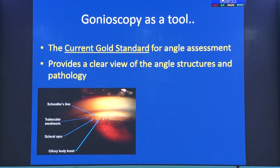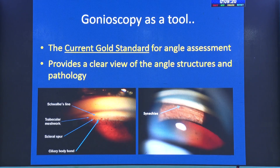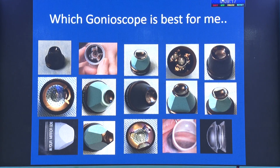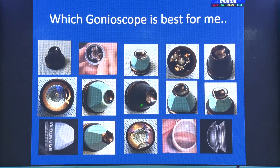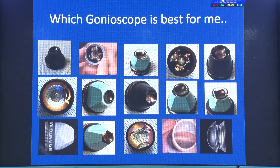Gonioscopy gives you a clear view of the angle structures and the pathology. This is what is available in India today — I have left out a couple, but most of these I sourced from distributors, took photographs, and compiled. When we have this plethora of lenses, it becomes very confusing to decide what to use.